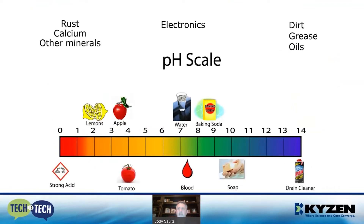Alkaline solutions are better for cutting through dirt, greases, oils, and other organic items. Acidic solutions are better for removing calcium, rust, and other minerals. Highly acidic products below pH 3 are referred to as corrosive, and pH 11 and higher are considered caustic. Products within pH 6 to 9 are typically in the neutral zone — alkaline at one end, neutral in the middle, acidic on the other.